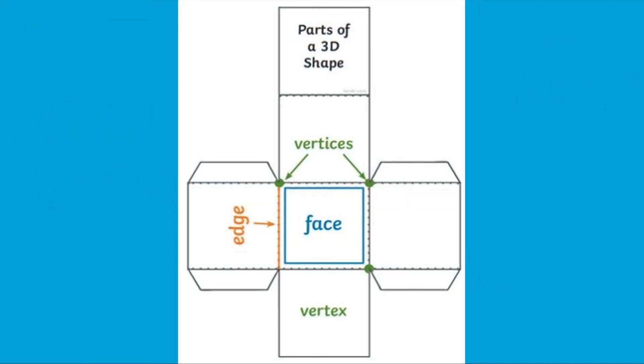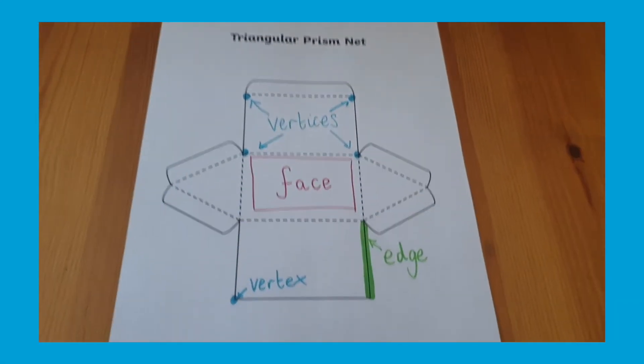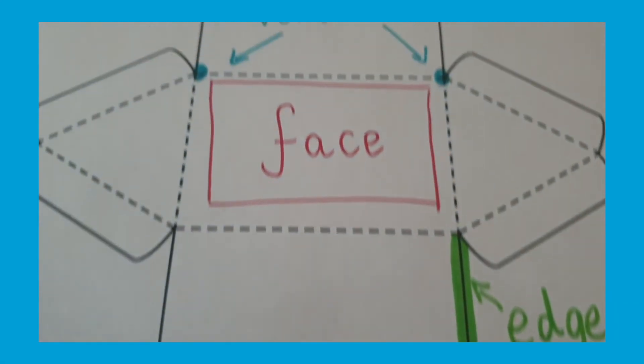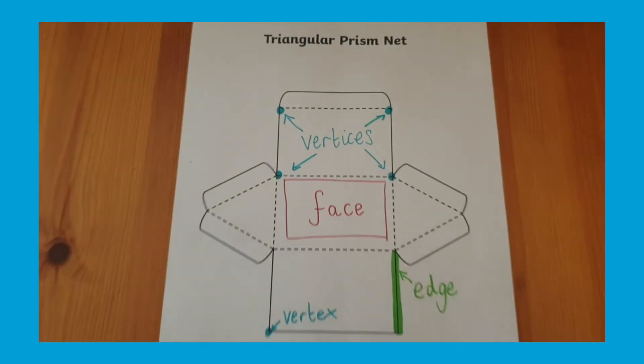Have a look at this picture of a net of a cube. It shows the key properties of a 3D shape. The cube is only one example, but children can apply this knowledge to other three-dimensional shapes too, for example this prism.